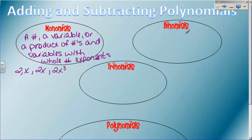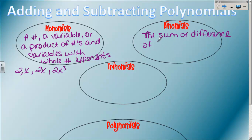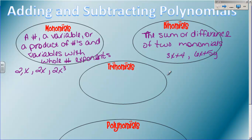A binomial is a fancy kind of polynomial. All a binomial is, is the sum or difference of two - hence the 'bi' - monomials. So it's two monomials that are either being added or subtracted. For example, 3x plus 4 is a binomial. 6x plus 5y is also a binomial, but they could also be a subtraction, so you could have 2x minus 13. Those are all binomials - two monomials added or subtracted.